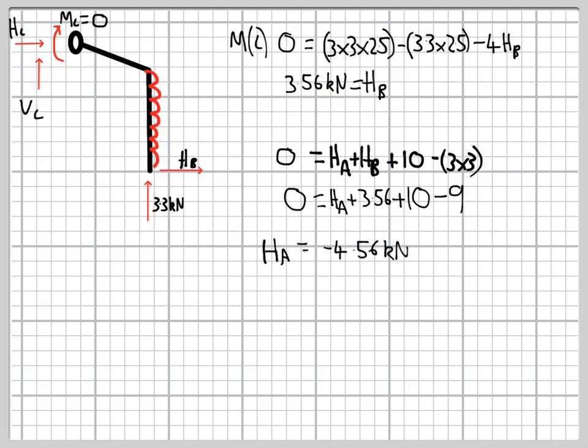So we've solved the problem. We've discovered what all four reactions are by applying equilibrium, firstly to the whole frame, and then secondly to a part of the frame. And the way we were able to do this was because of the pin at the support.